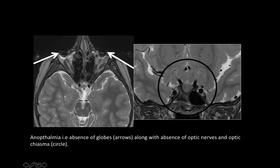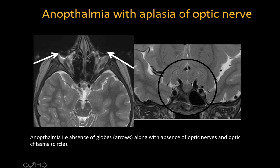Coming to the congenital category, here we see T2 axial and T2 coronal weighted images where there is complete absence of the globe, i.e. enophthalmia, associated with absence of both the optic nerves and the optic chiasm. This is a very rare pathology — enophthalmia with aplasia of the optic nerve and optic chiasm.